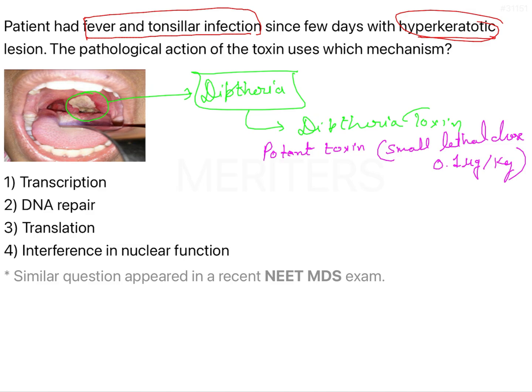It has a virulence factor responsible for local effects as well as systemic complications. This is coded by a gene known as the tox gene — very important for exam purposes — and this is a beta phage-encoded gene.